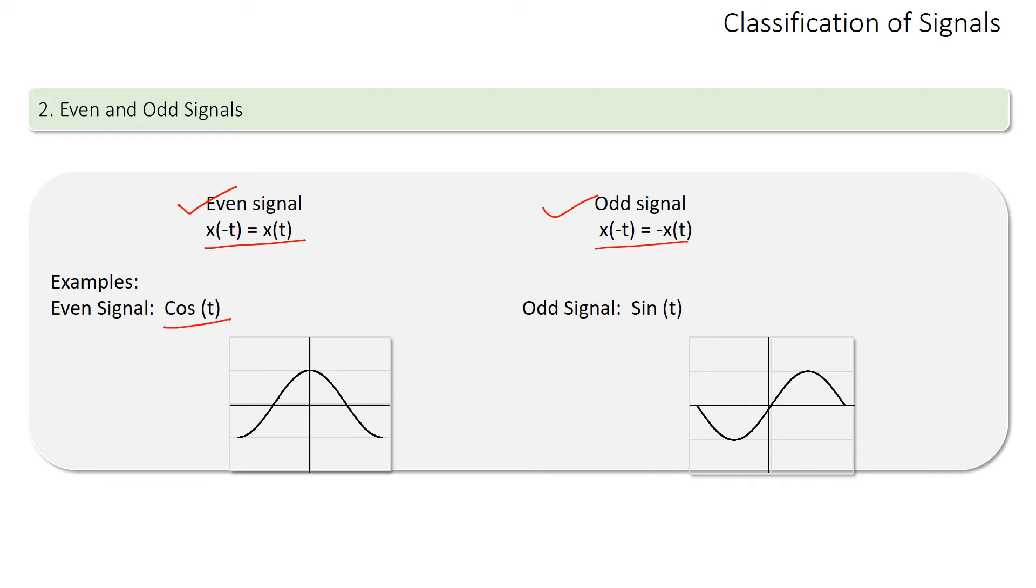Cos(t) represents an even signal because cos(-t) equals cos(t). And sin(t) represents an odd signal because sin(-t) equals minus sin(t).